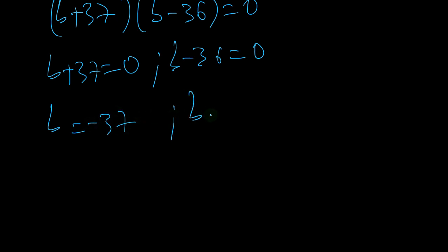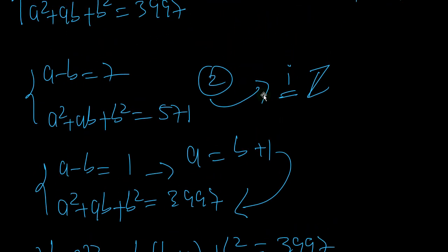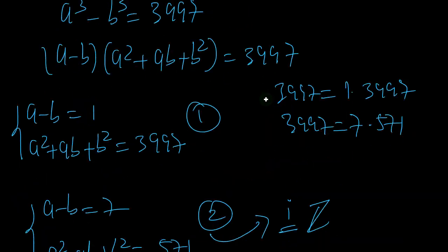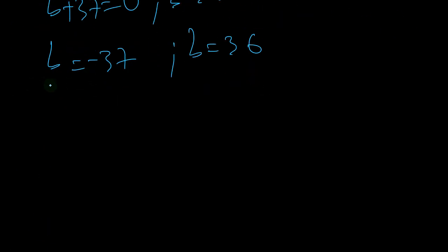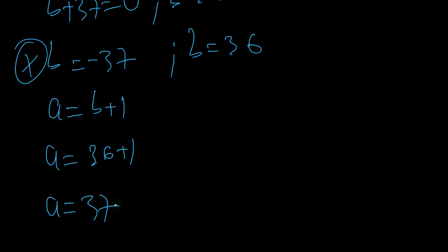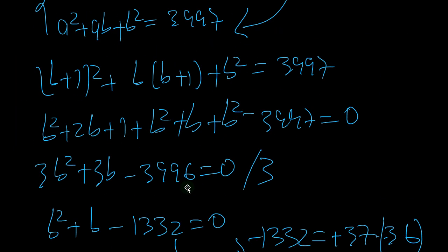From this we get b equals negative 37 or b equals 36. But remember we said b must be greater than zero, so we reject b equals negative 37. We keep b equals 36. Since a equals b plus 1, we get a equals 36 plus 1, so a equals 37.